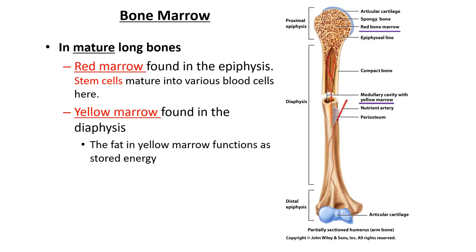In the epiphysis, you find cancellous bone and hematopoietic cells — blood cell precursors. In the diaphysis, you find primarily fat tissue.